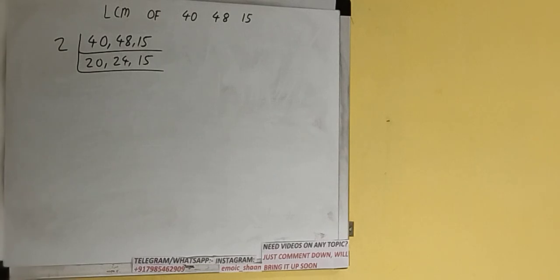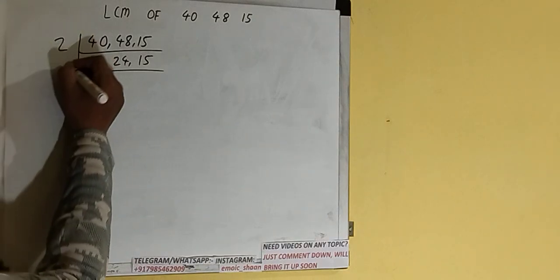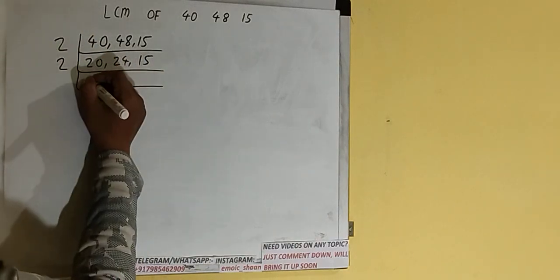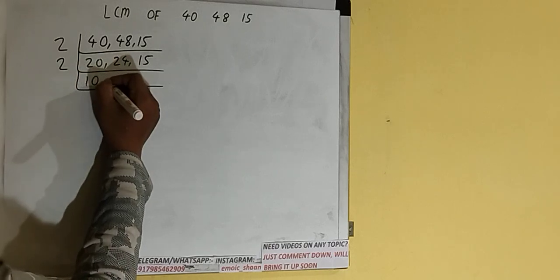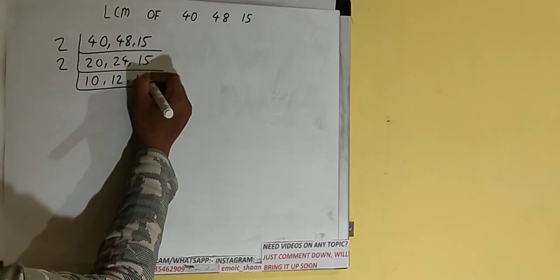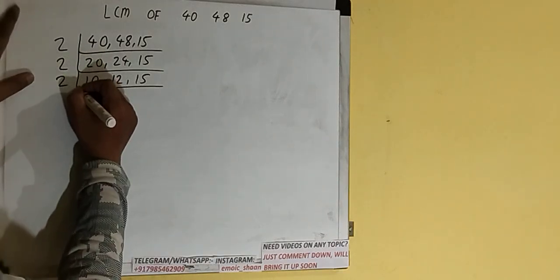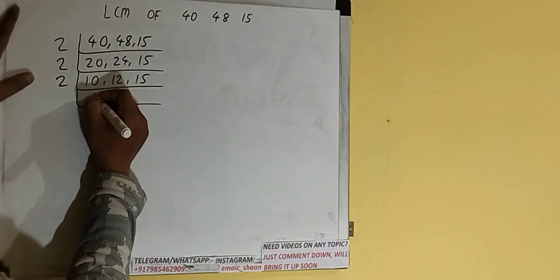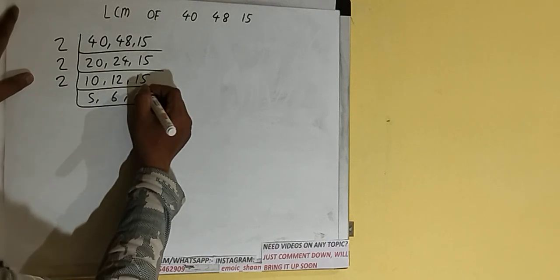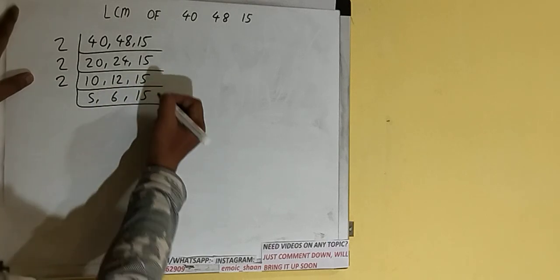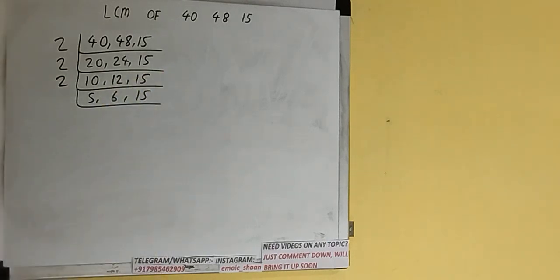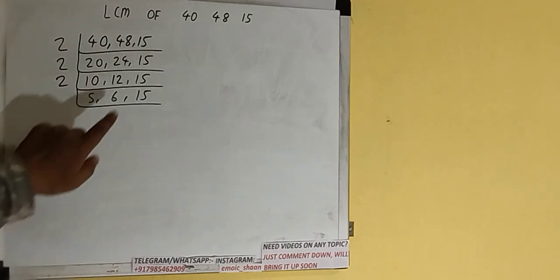Again, the first and second numbers are divisible by 2, so we divide: the first becomes 10, the second becomes 12, and 15 is copied down. Again, the first two numbers are divisible by 2, so we divide: the first becomes 5, the second becomes 6, and 15 is copied down.